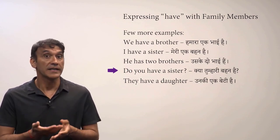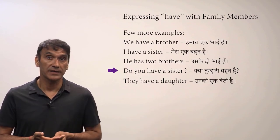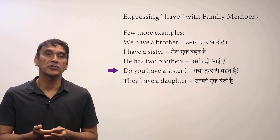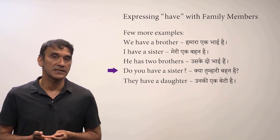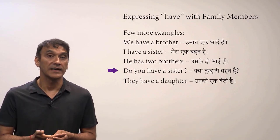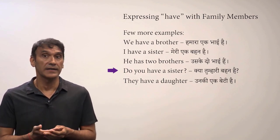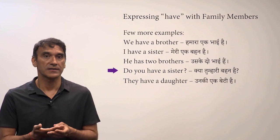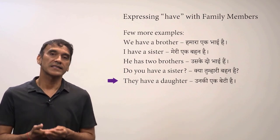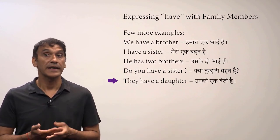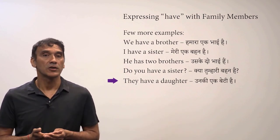'Do you have a sister?' — kya tumhari behen hai. This is a yes or no question, so the sentence starts with kya. Kya tumhari behen hai means 'do you have a sister?' The last example: 'They have a daughter' — unki ek beti hai.